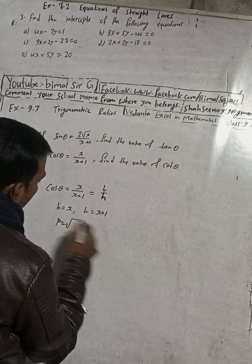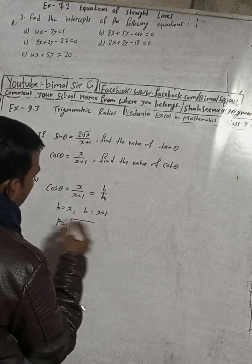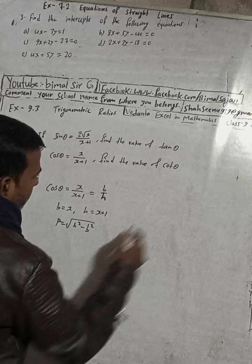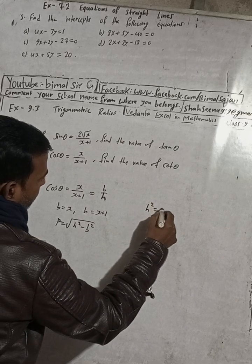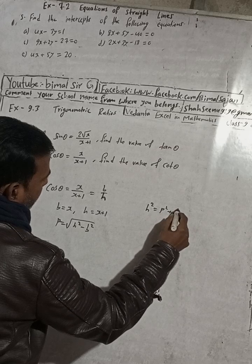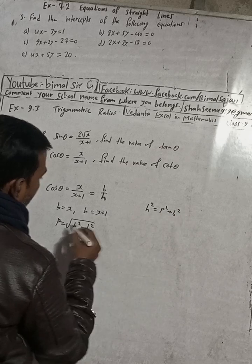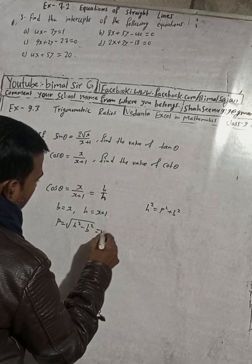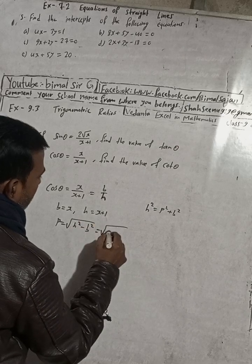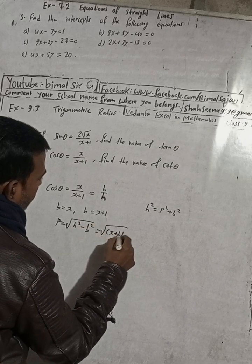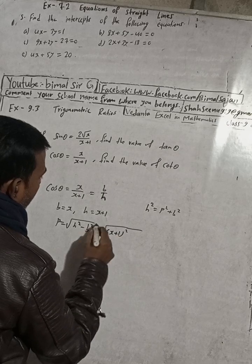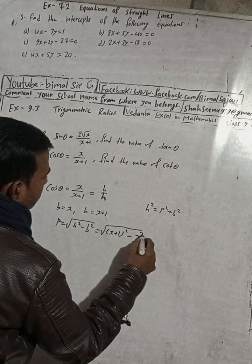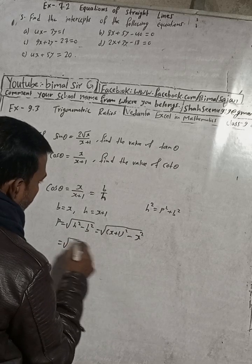Now B and h are known, so P value means root under h squared minus B squared — this is the formula. The base formula is h squared equals P squared plus B squared. From this we can write P equals root under h squared minus B squared. h squared is x plus 1 whole square, and B squared is x squared.